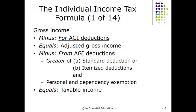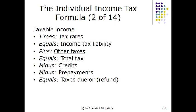You take the greater of the standard deduction or itemized deductions, along with personal and dependency exemptions, and subtract them from AGI to arrive at taxable income. With taxable income, you apply the tax rates based on filing status. It's a graduated income tax, so not all income is taxed at the same level. You get your income tax liability, add any other applicable taxes, and that equals total taxes.